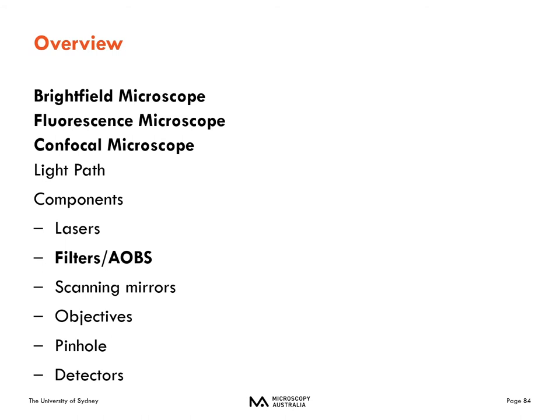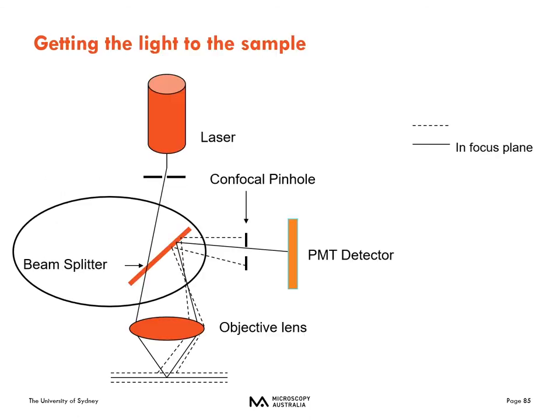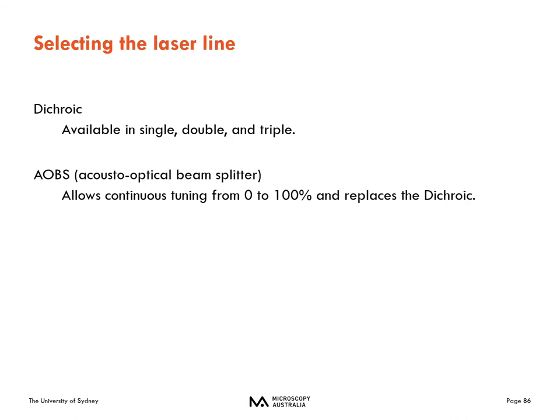Now I'm going to talk about filters and AOBS — how we control the wavelength of light coming to the sample, as well as the wavelength from the sample going to the detector. Because you're using lasers, you very rarely need an excitation filter, but you do need the dichromatic mirror to get your light to the sample separate from the emissions you want to reach the detector. We typically use standard dichroic mirrors — a single, double, or triple, as I talked about with fluorescence microscopy.